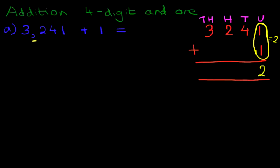Now for the tens, we only have the number four. There's nothing else to add, so that remains four. The hundreds is the same, and the thousands is the same. And we have our answer. The answer is 3,242.